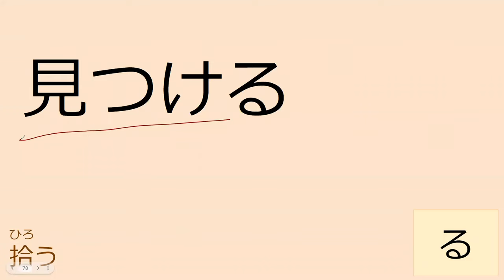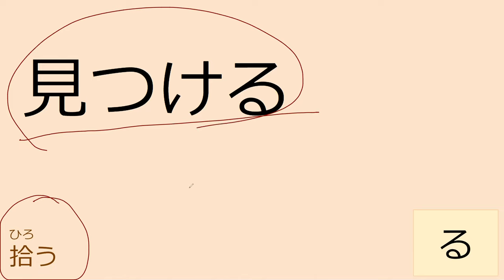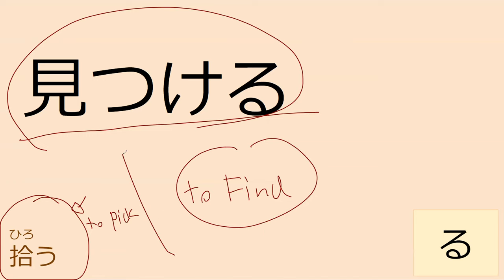Our next verb is mitsukeru. I decided to have a comparison with hirou here — they're very similar in that both can mean 'to find something.' Mitsukeru means you decided you're going to find something: you went searching and then you found it. If you say mitsukeru, it means 'I will find it' — you're making a decision. Hirou means you happened upon it. You're just walking and there's something on the floor. Hirou tends to be translated as 'to pick up' versus mitsukeru, which is 'to find.' If you find something without looking for it, hirou is used. If you went out of your way to find it, mitsukeru is used.